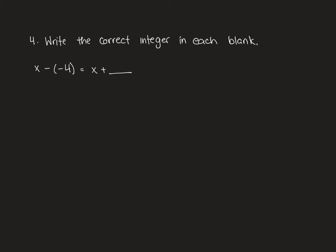Question 4 asks you to write the correct integer in each blank. So x minus -4 equals x plus what? Well, we have to look at what's different. They have changed our operation, which means we will also need to change whether our second number is negative or positive. So it will be positive 4.